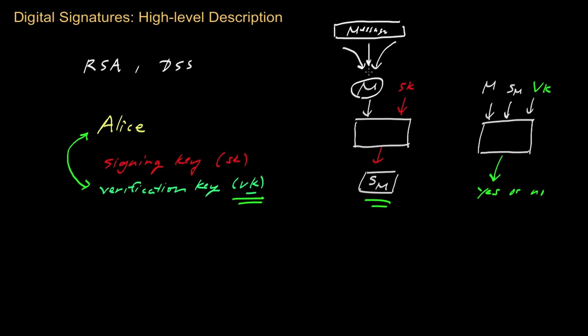This hash-and-sign paradigm is safe as long as it's hard to find two messages that map to the same output under the hash function — in other words, as long as the hash function is collision resistant, it will result in a secure signature scheme.